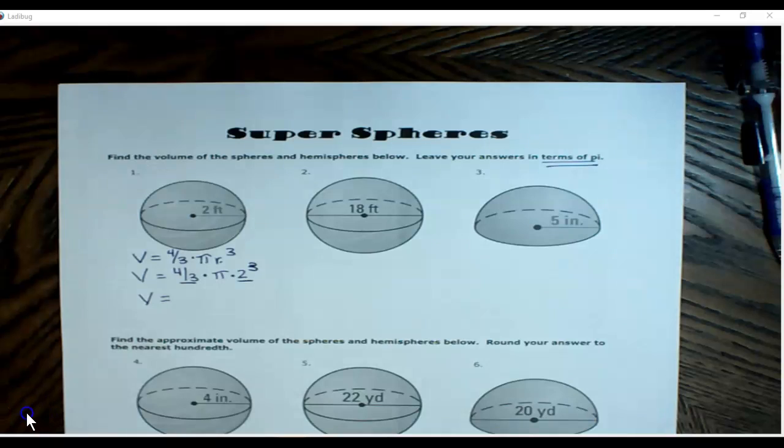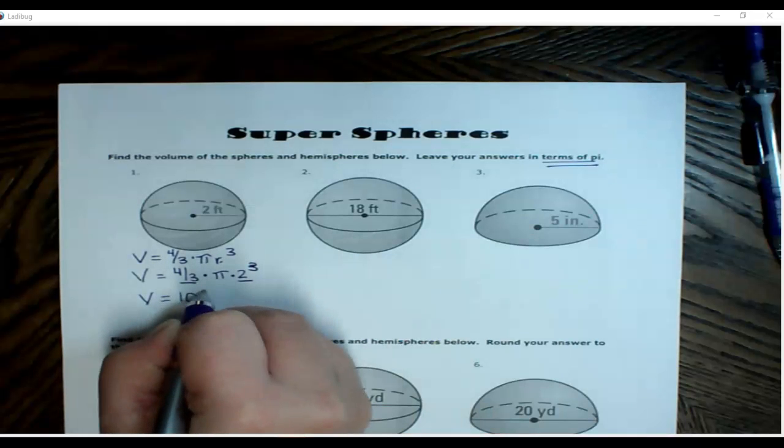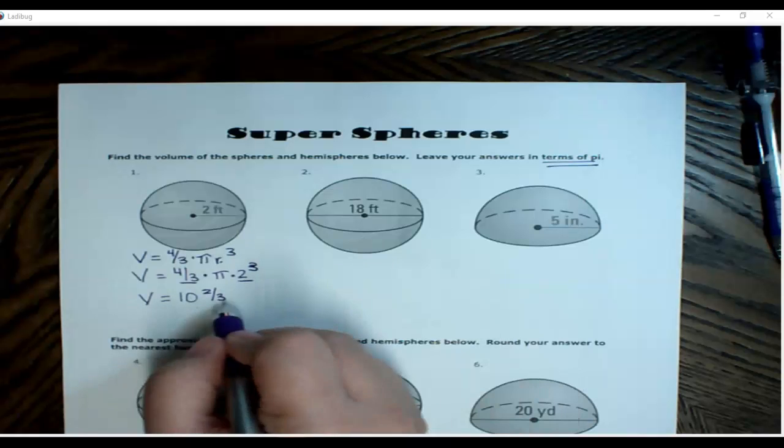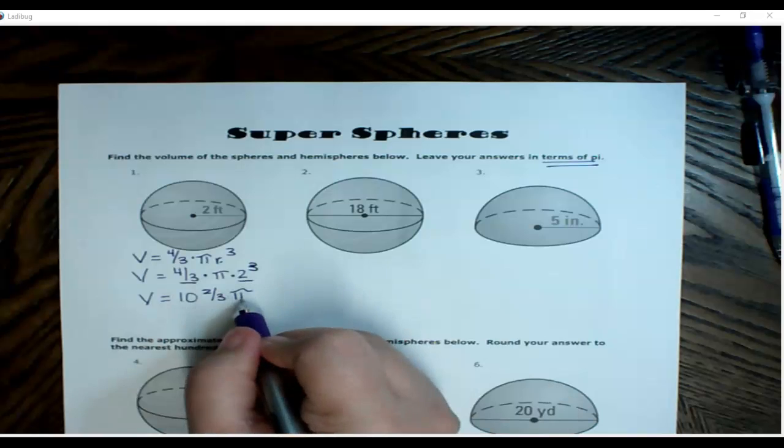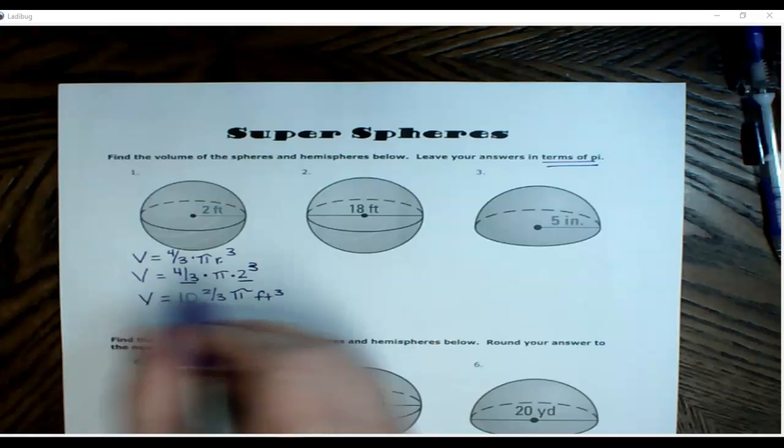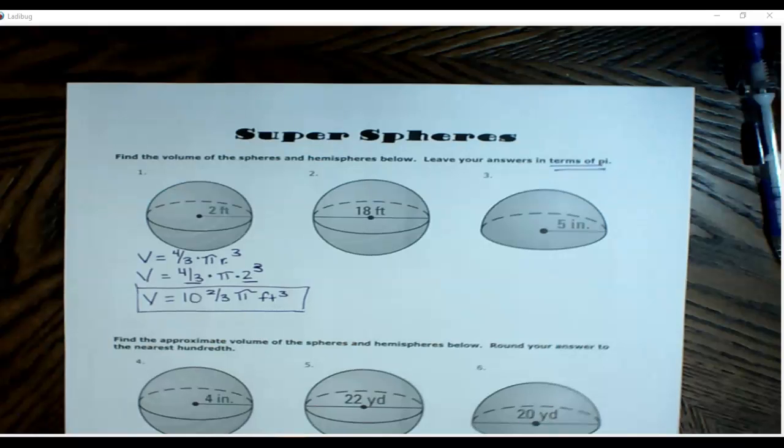So do that now. Okay, when you use your calculator to multiply that, you should notice that you get an answer of 10.666 repeating. So we know that that's going to be 10 and two-thirds, because 0.6 repeating is going to be the fraction two-thirds. So 10 and two-thirds pi, because remember we had to leave our answer in pi. My measurement is feet, so it's going to be feet cubed.